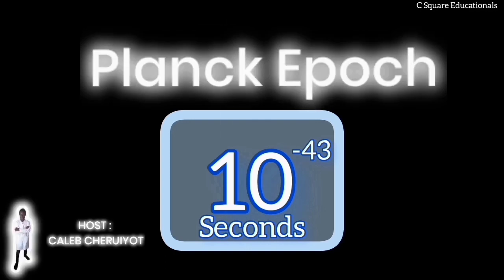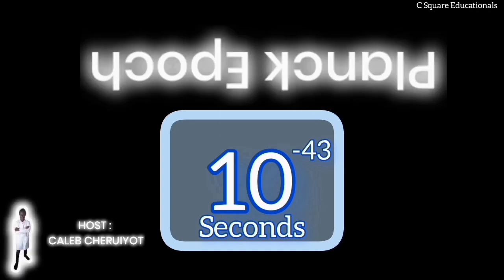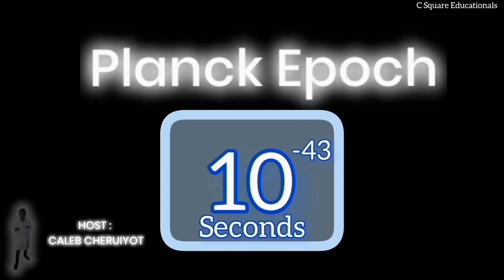Most of our current understanding comes from the period after inflation. So, the accurate way to view the Big Bang is not as a single point of origin, but as a period when the early universe was extremely hot, dense, and rapidly expanding. Thus, the Big Bang is a description of everything that occurred after T equals 0.